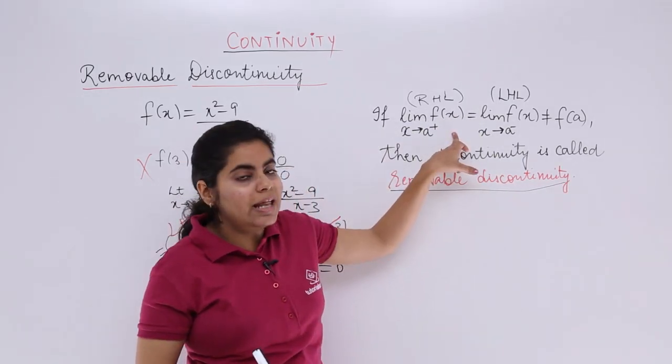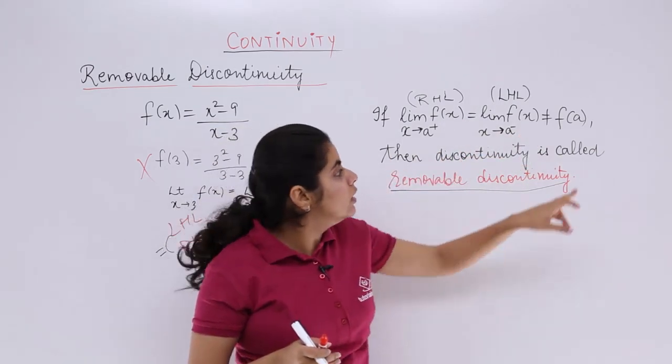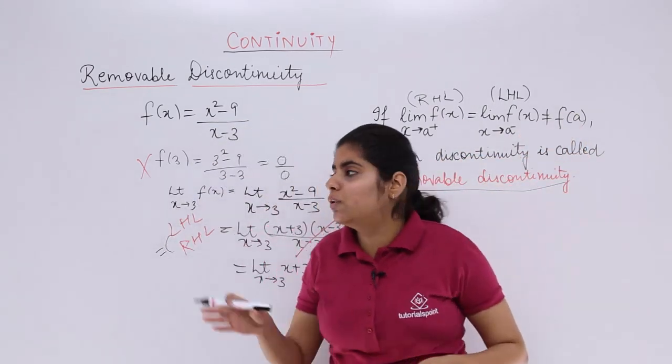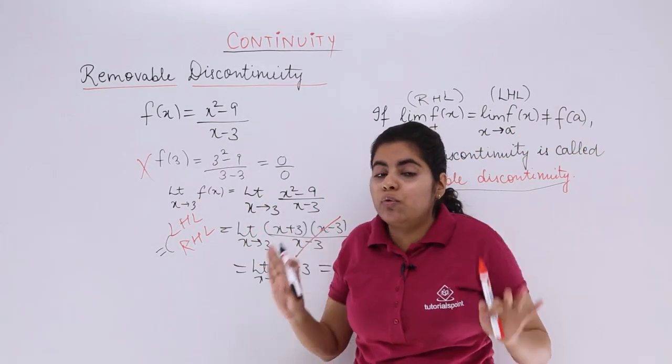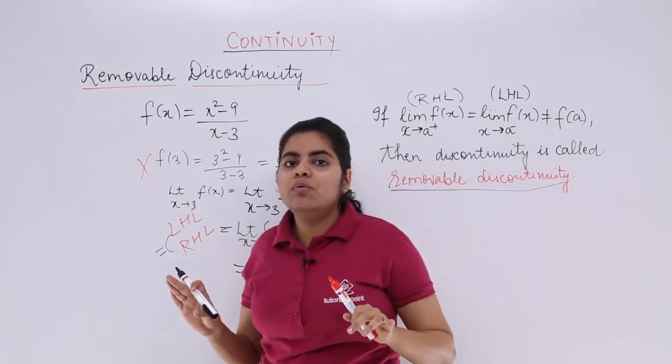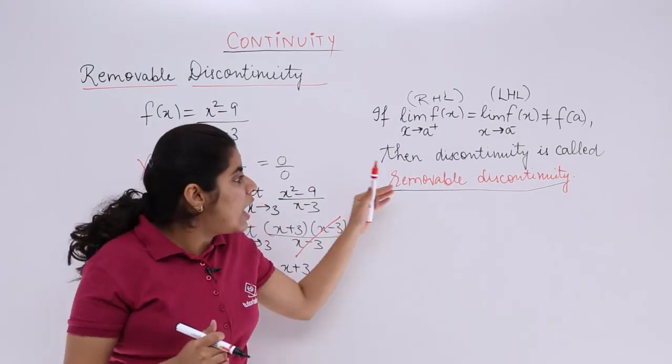Same condition: LHL, RHL equal, but this third thing is not equal to them. So it is a kind of, what kind of discontinuity? Removable. We can always remove. So how to remove? The question is that.